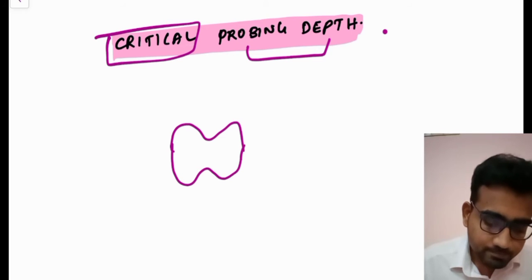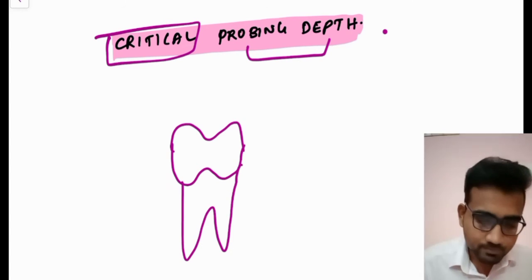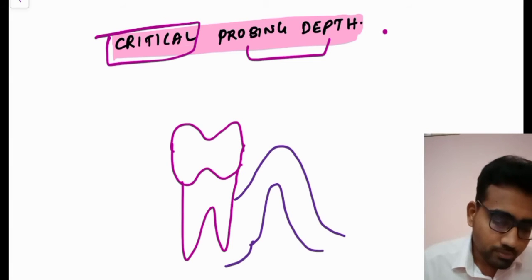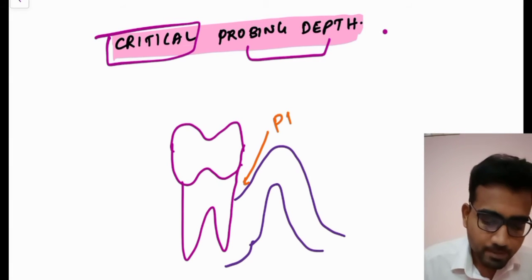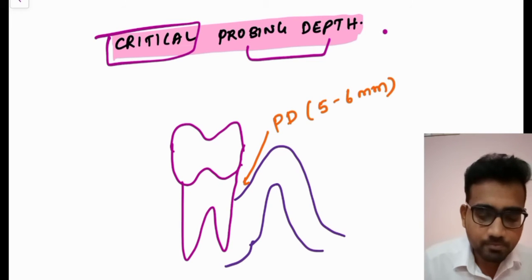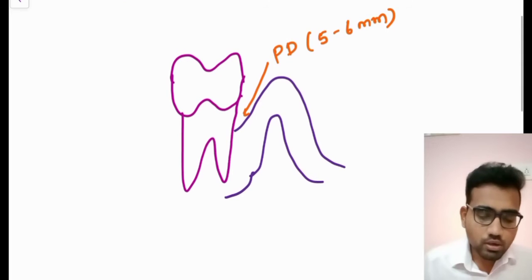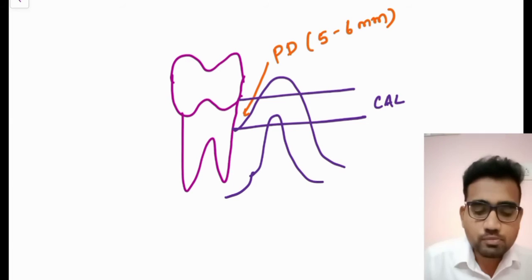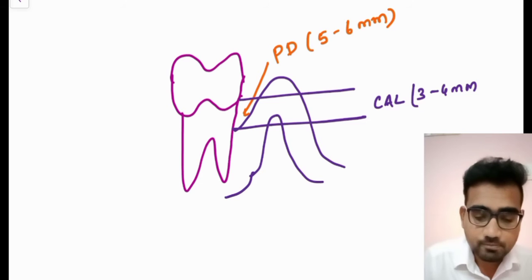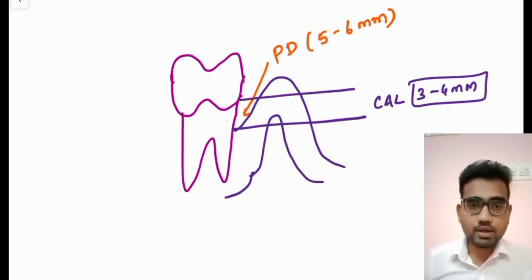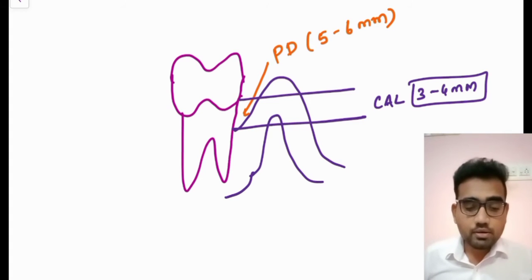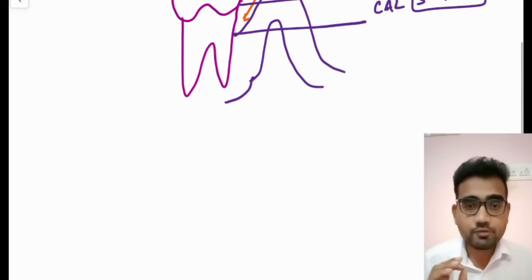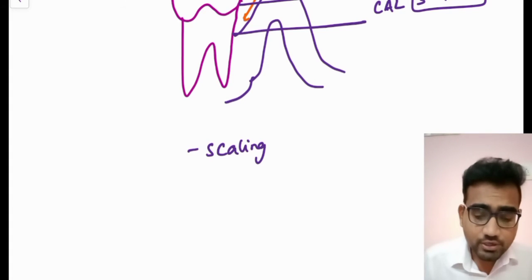A patient comes to your clinic complaining of some periodontal symptoms. You ask the patient to sit and you measure the probing depth — around 5 to 6 mm. The clinical attachment level, that is from the CEJ to the base of the sulcus, is assumed to be around 3 to 4 mm. You have measured this and you are planning to do treatment. You have decided you are going to do scaling.